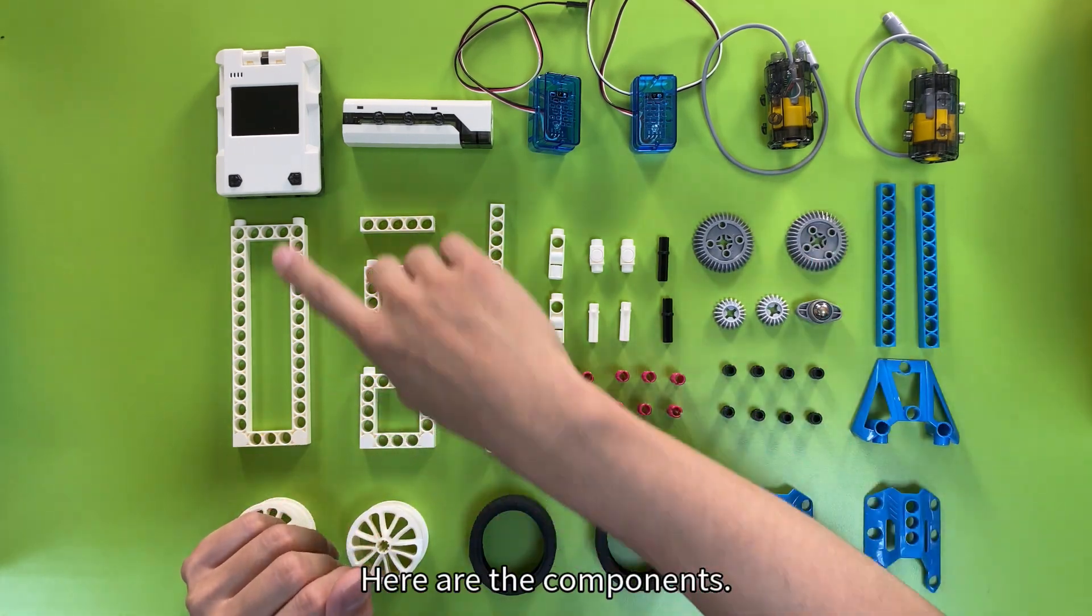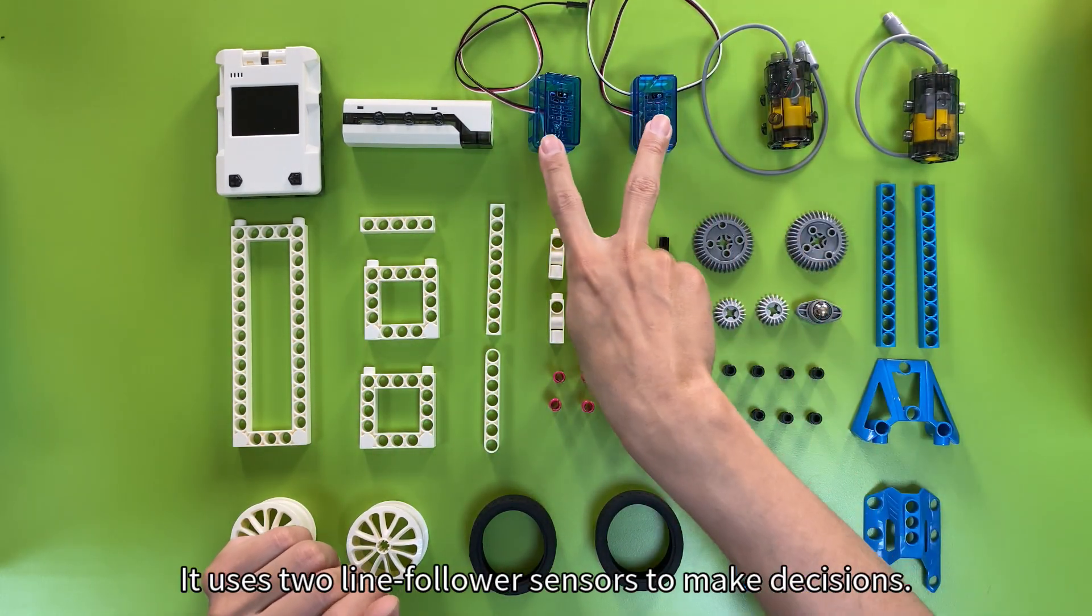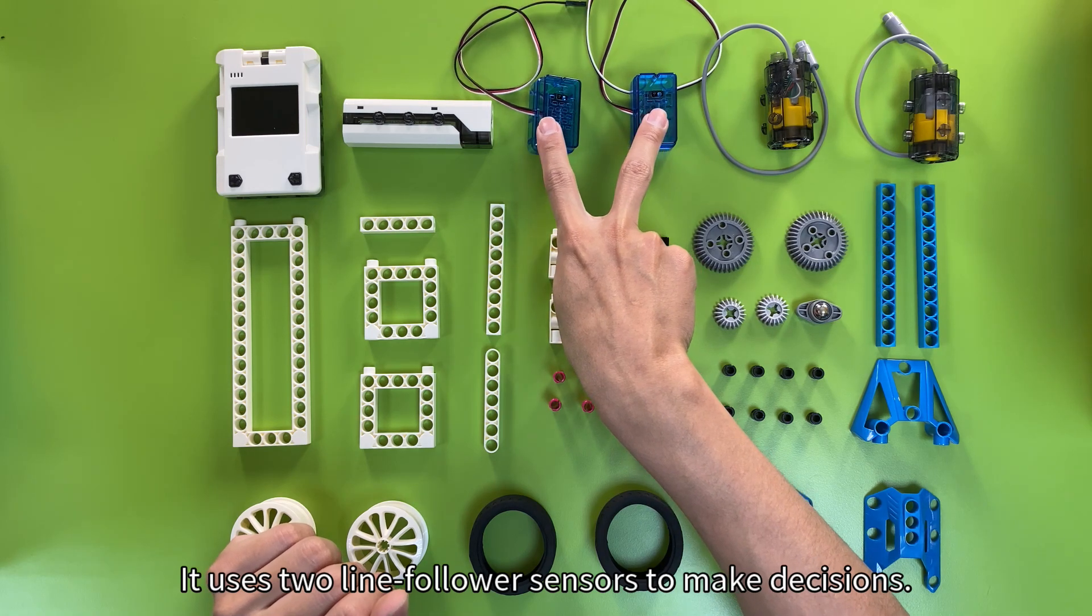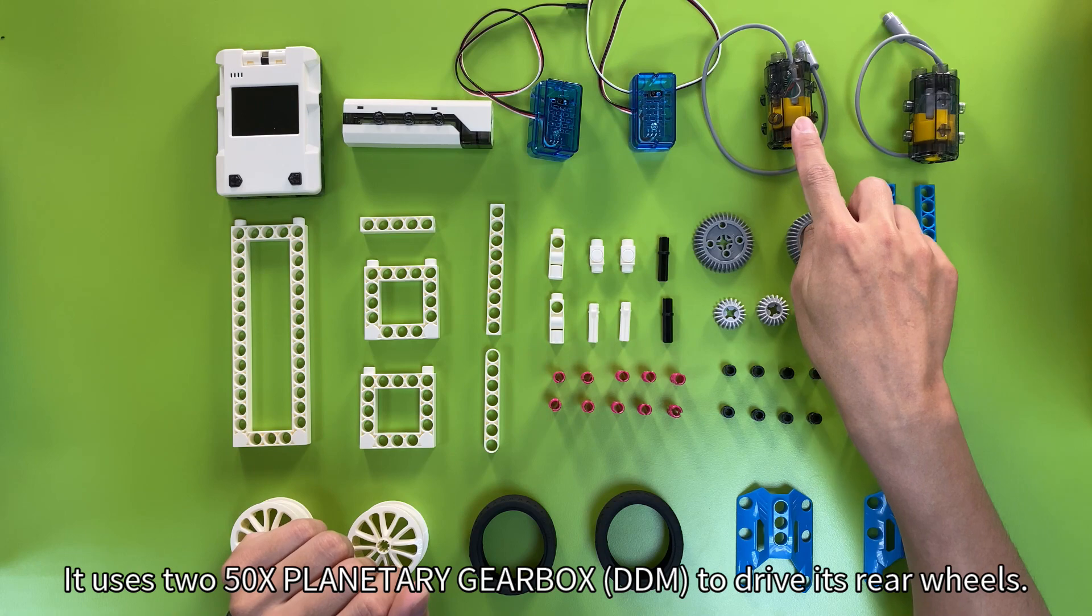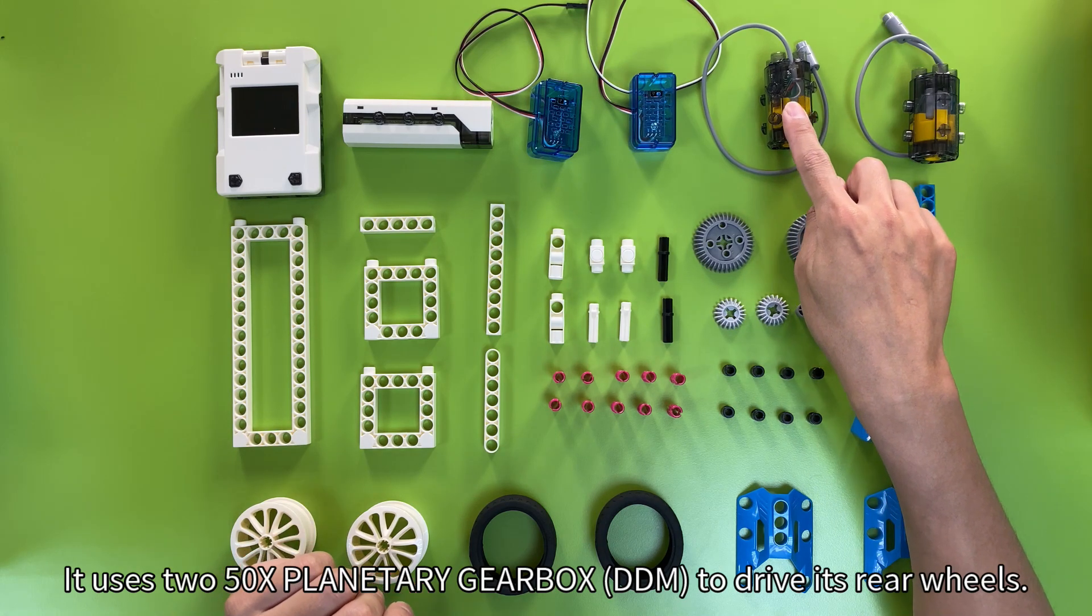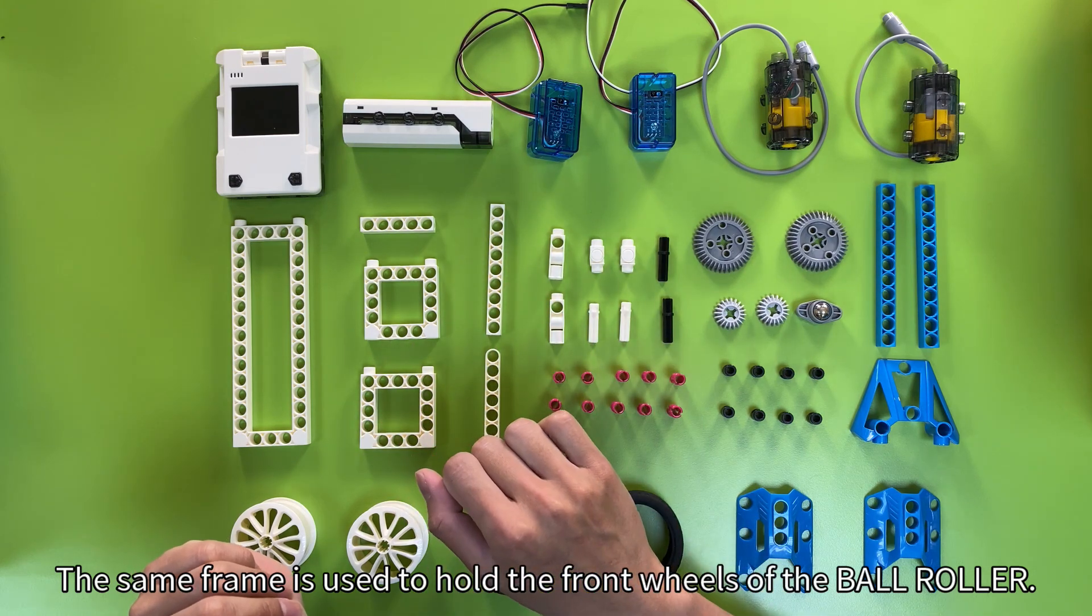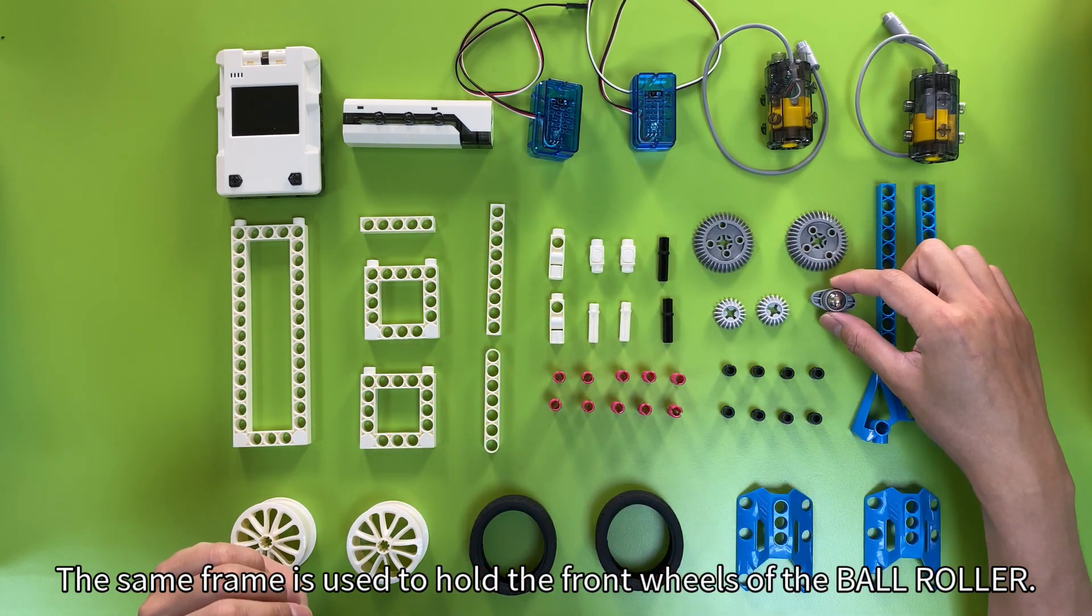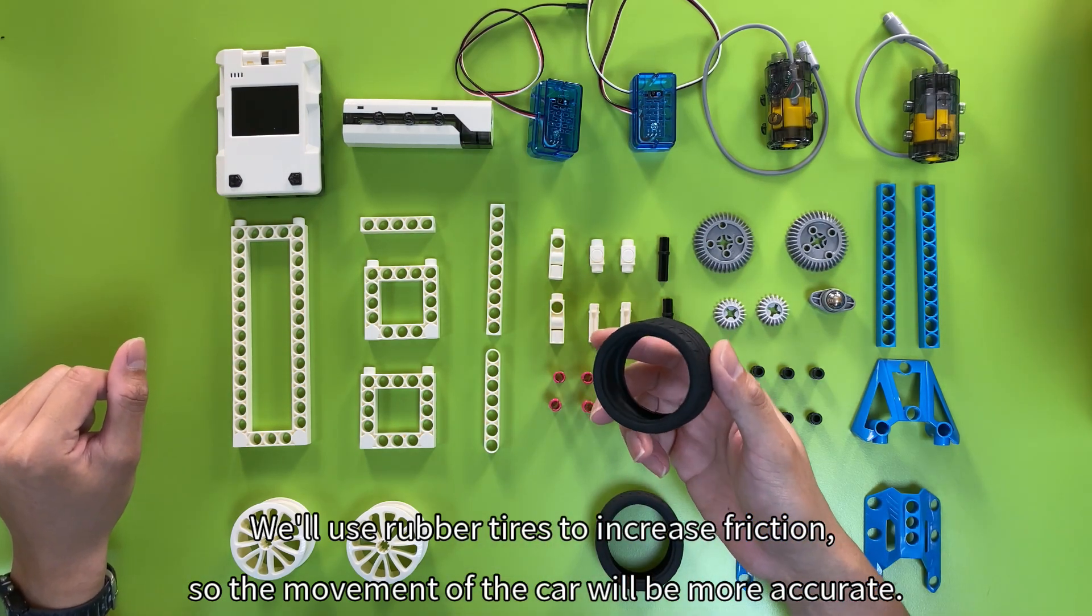Here are the components. It uses two line follower sensors to make decisions. It uses 250x planetary gearbox to drive its rear wheels. The same frame is used to hold the front wheels of the ball roller. We'll use rubber tires to increase friction, so the movement of the car will be more accurate.